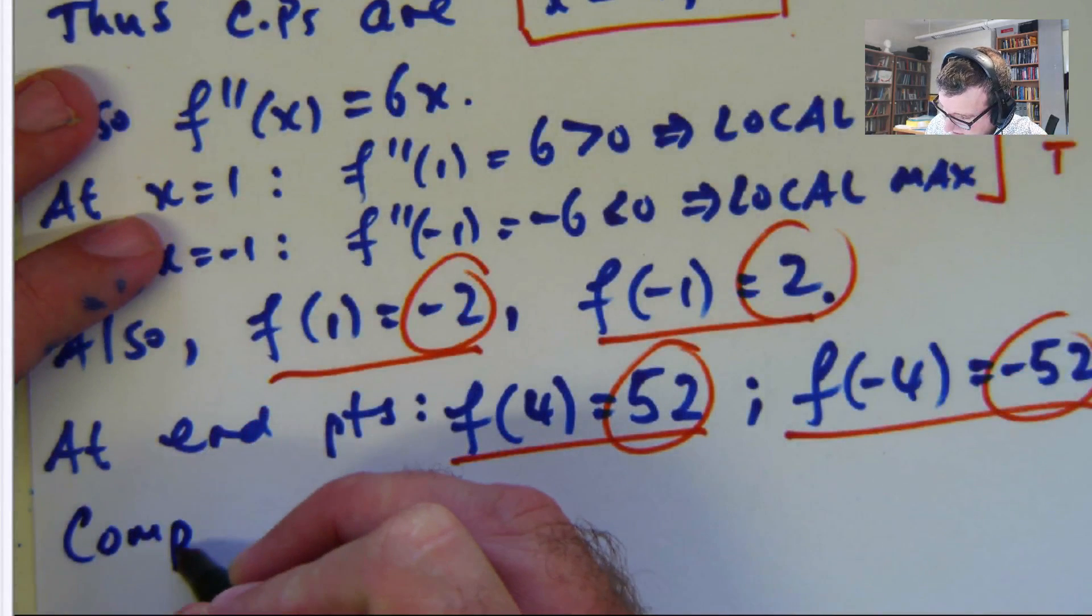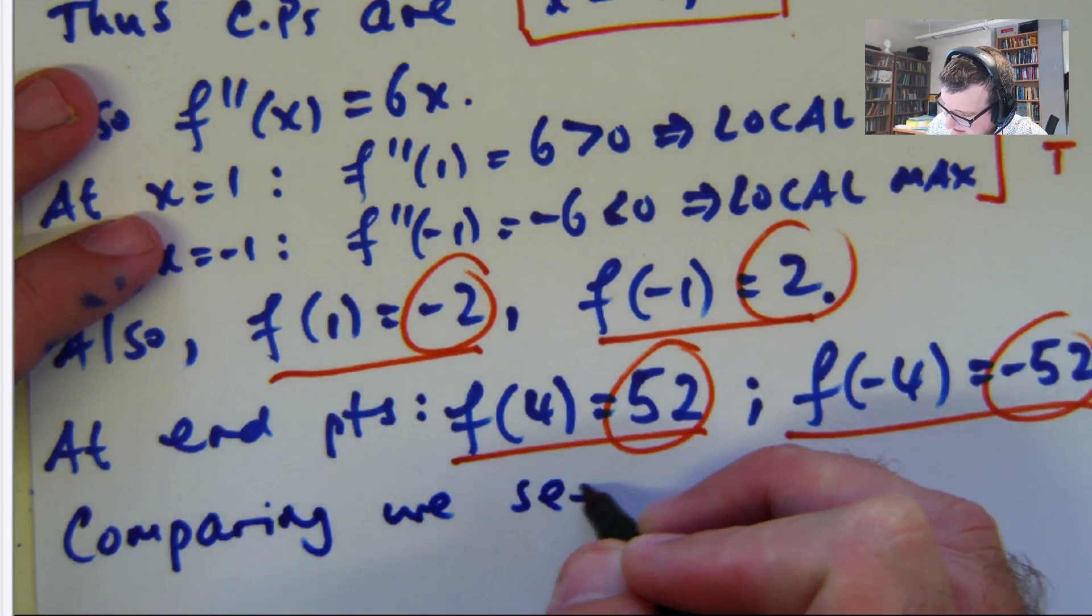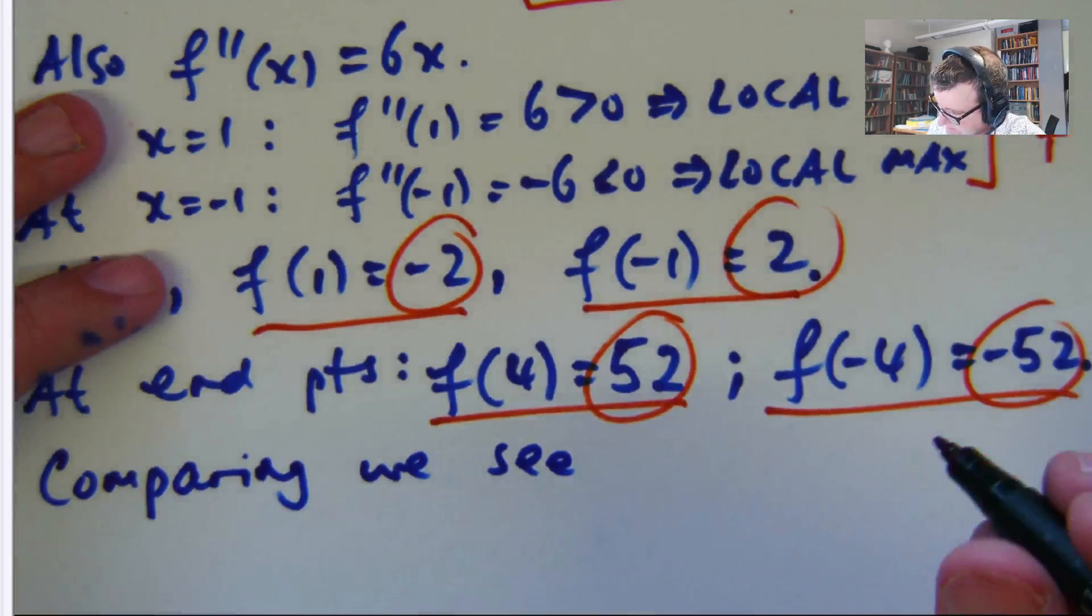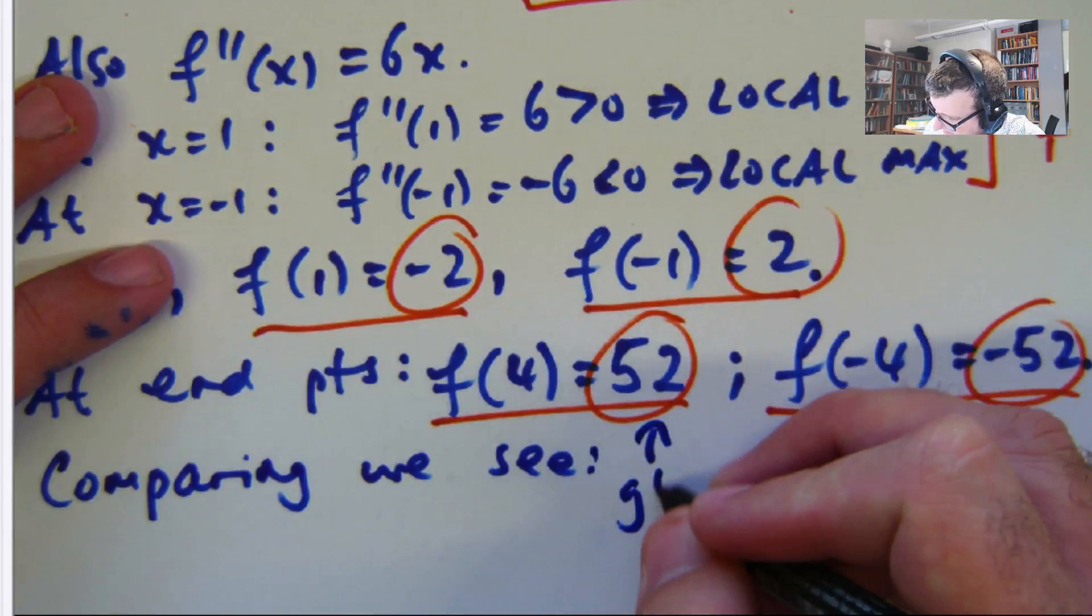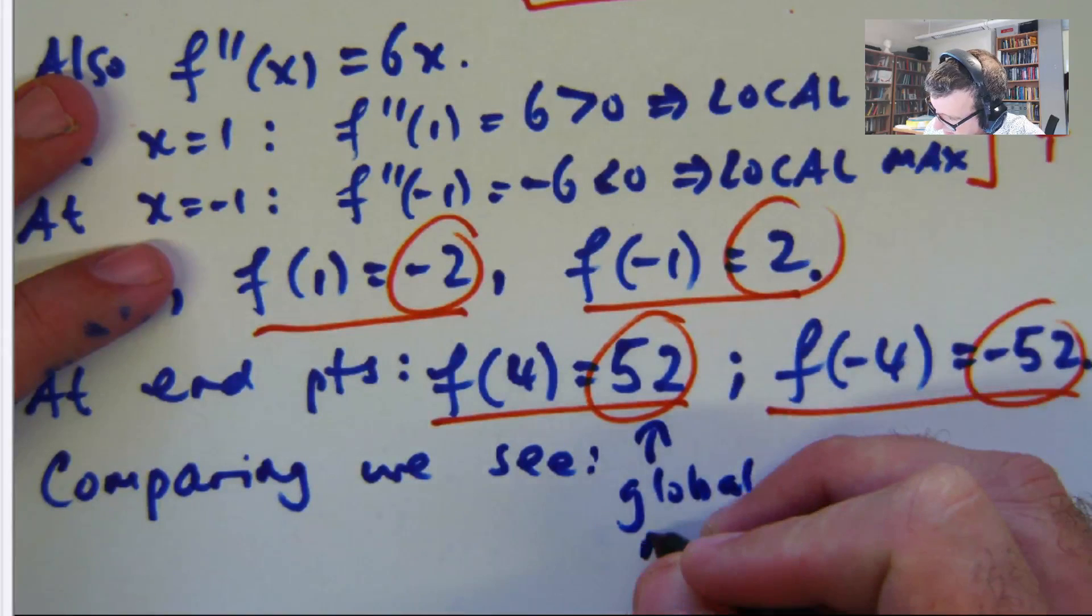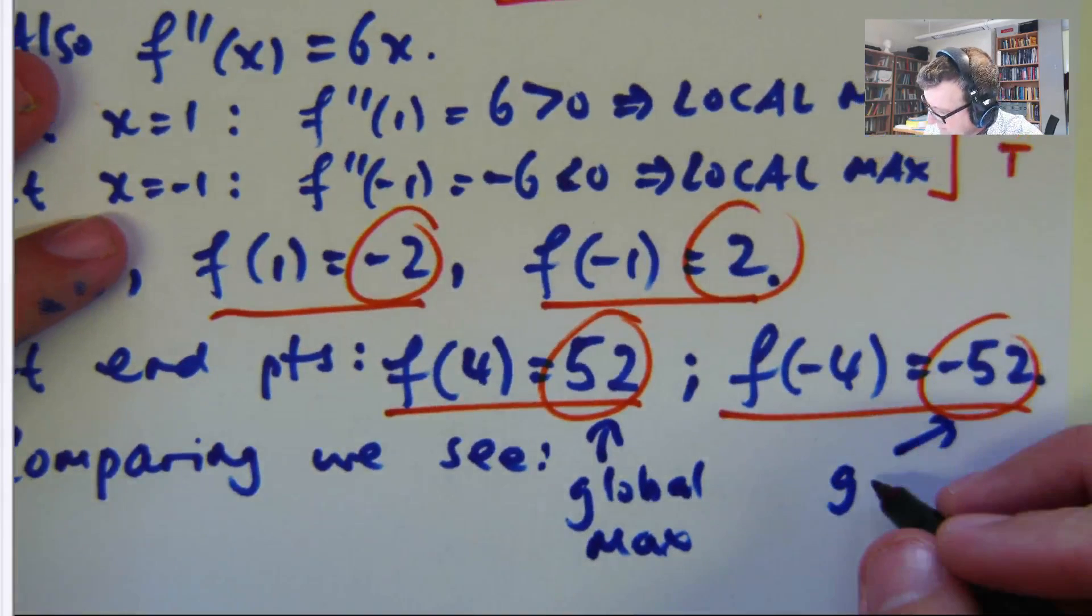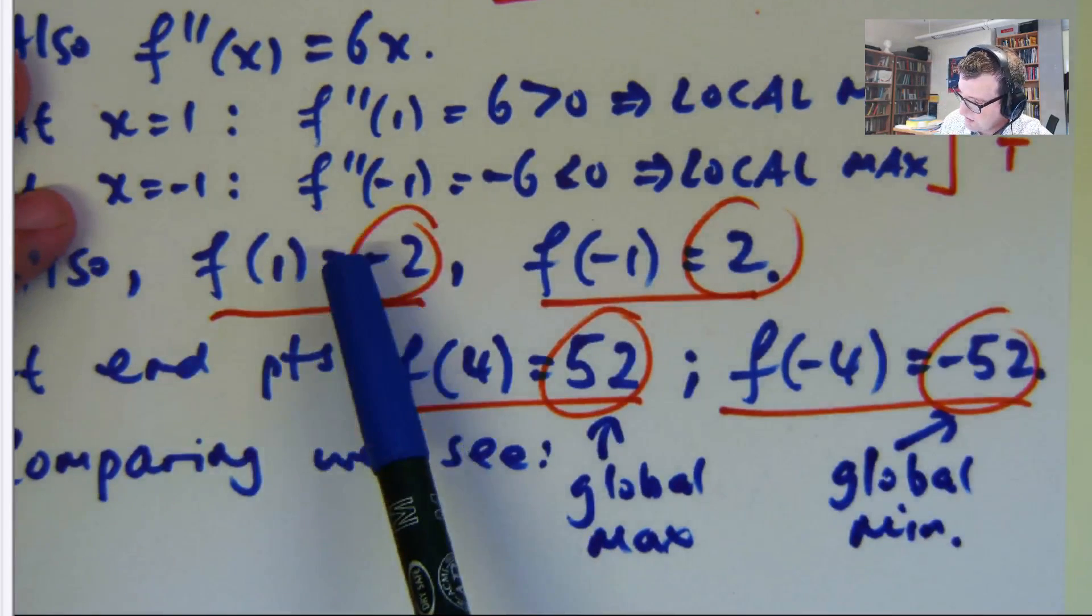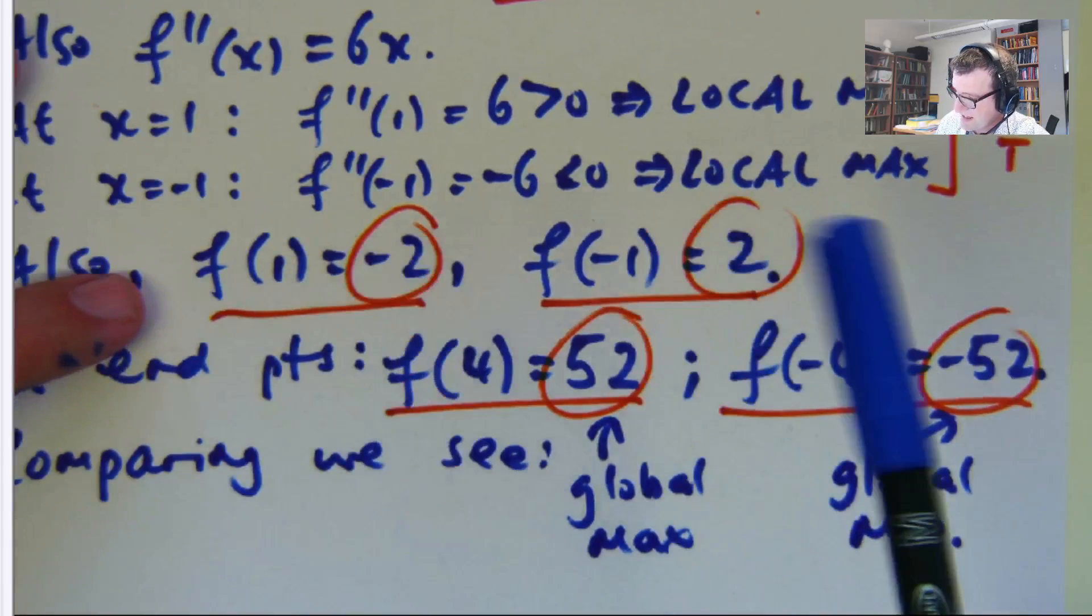So comparing, we see that the global max, this is the global max, and that is the global minimum. That's a local, at x equals 1, that's a local minimum, that's a local maximum.